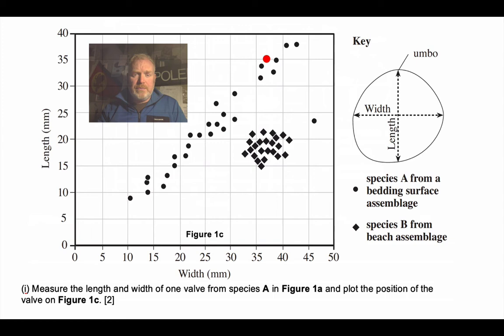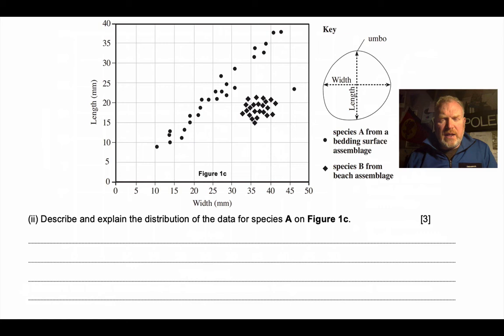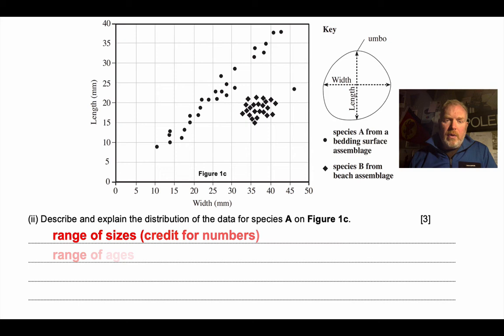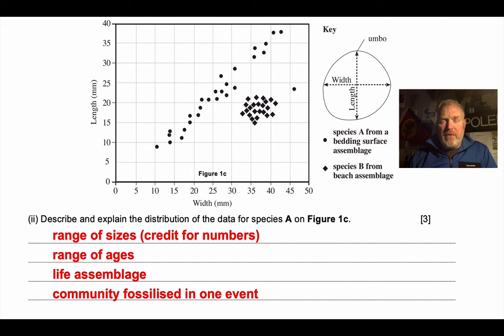If we look at the distribution of data for Species A, we see a wide spread across the graph. This is characteristic of a range of sizes and therefore a range of ages — a bivalve gets bigger with age. This is most likely to be a life assemblage: we've got a whole community here, juveniles and mature adults, fossilized clearly in one event.